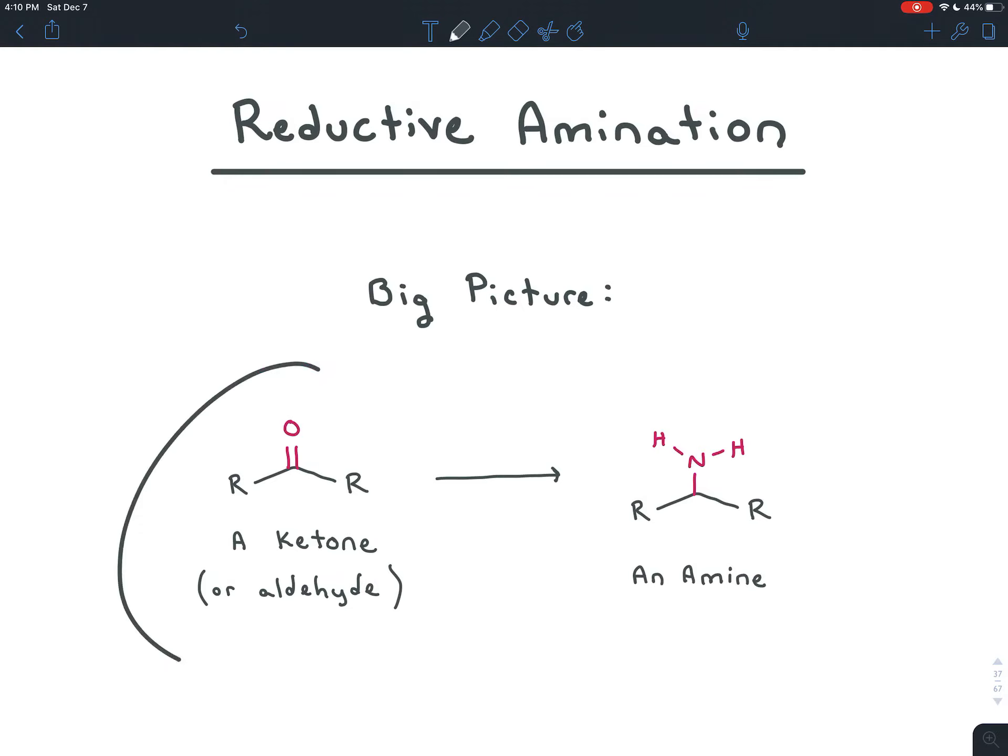Reductive amination allows you to turn an aldehyde or a ketone into an amine by doing a reduction. The reduction should make sense. Remember that reduction means you're decreasing the number of bonds to an electronegative atom. In an aldehyde or ketone, you have two bonds to an electronegative atom. And in an amine, you only have one.